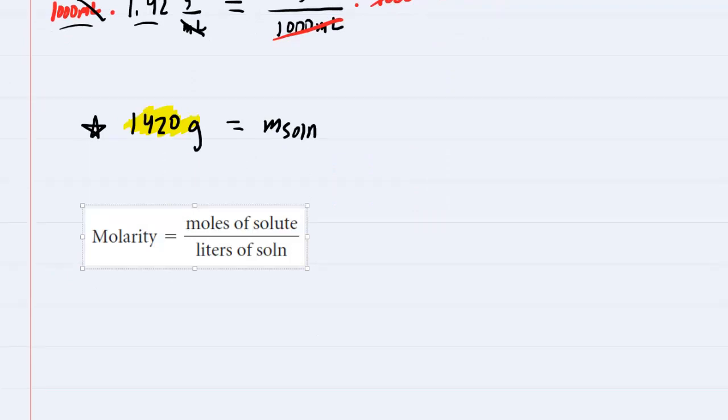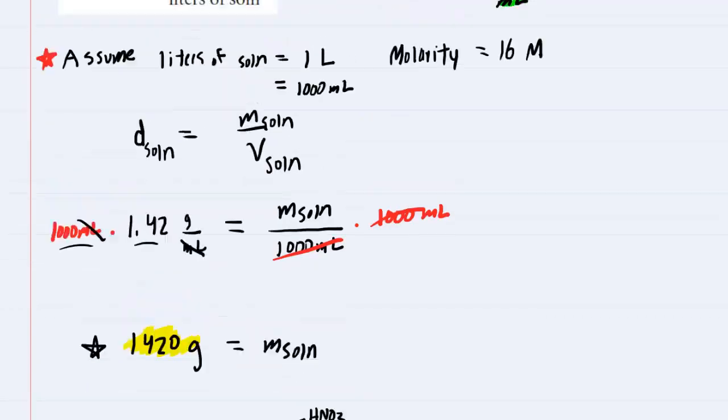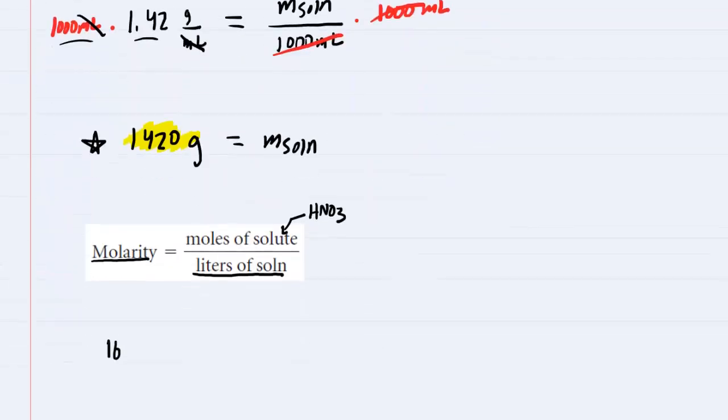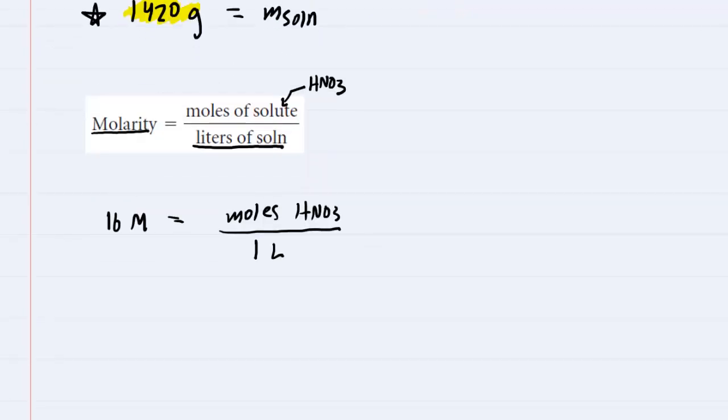So molarity equals moles of solute over liters of solution. Our solute is the HNO3. We're going to plug in the given molarity, as well as the one liter of solution that we assumed, and we can easily calculate the moles of solute. Recall that the molarity of our solution was 16 molar. So 16 molar equals the moles of HNO3 divided by one liter. That's why one liter was a nice, easy assumption, because when we multiply both sides by one liter, we have a nice, easy calculation. When you multiply molarity by liters, you end up with moles. So you'll have 16 moles equals the moles of HNO3.